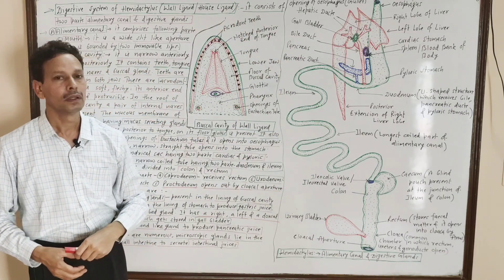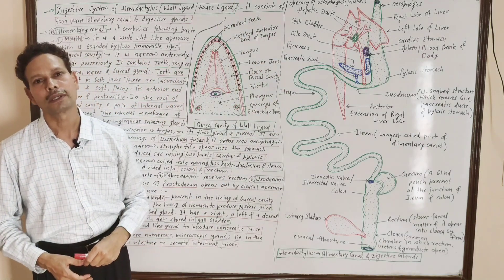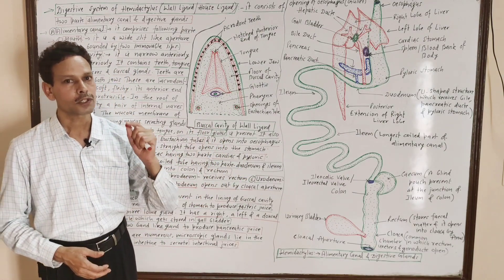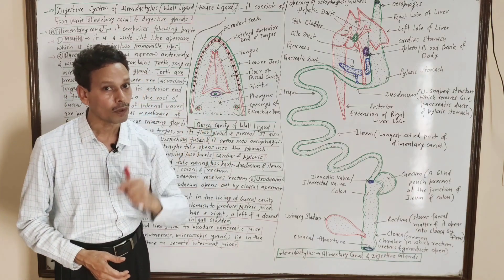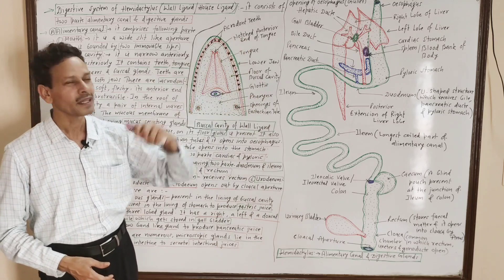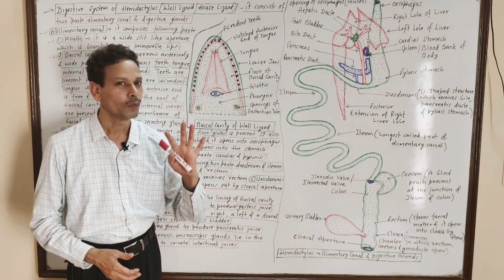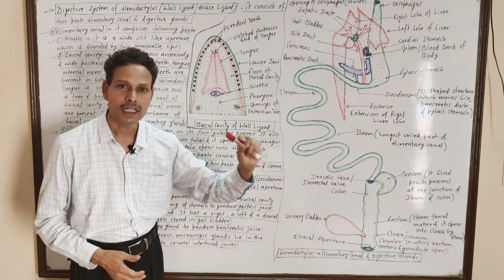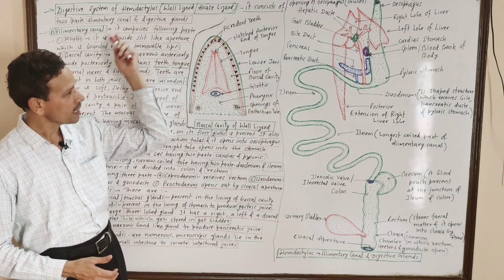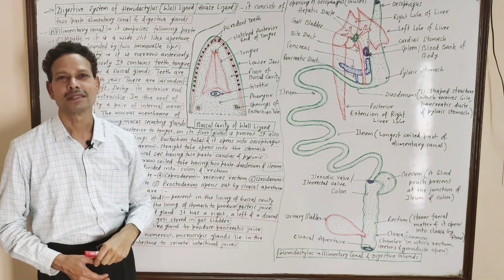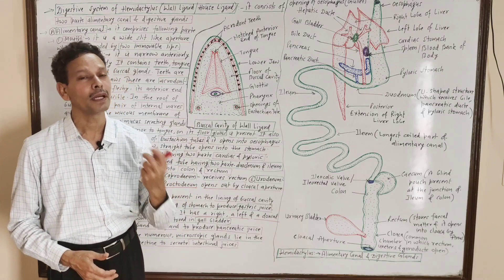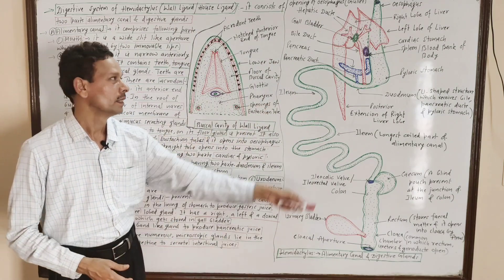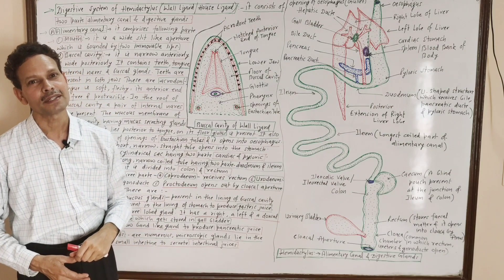Dear students, please note that the notes of this video lecture are available in the description. Today we will start a new class — Reptilia — and study the wall lizard, common house lizard, that is Hemidactylus flaviviridis. We will discuss the digestive system of wall lizard Hemidactylus. The digestive system is divided into two parts: the alimentary canal and the digestive glands.